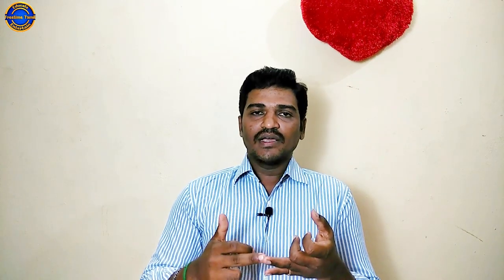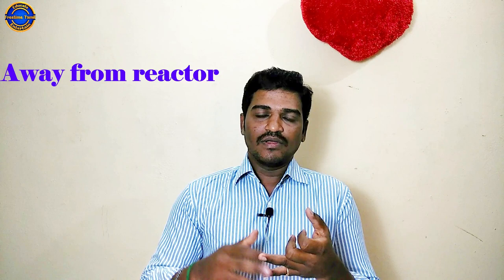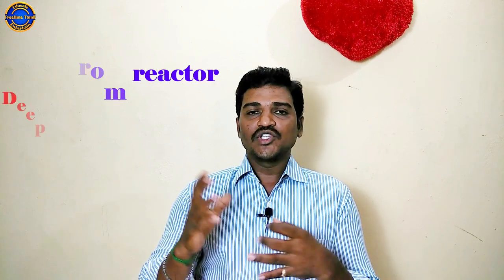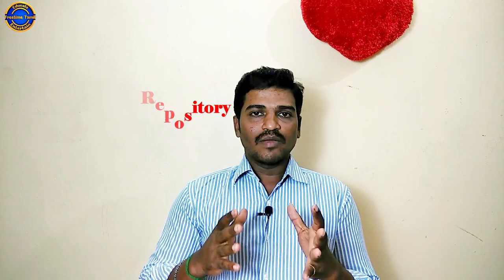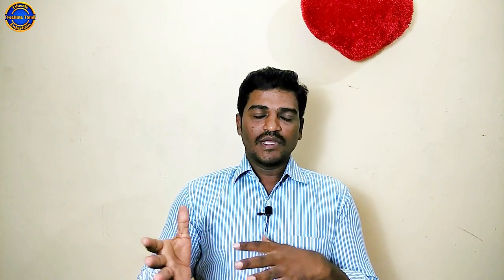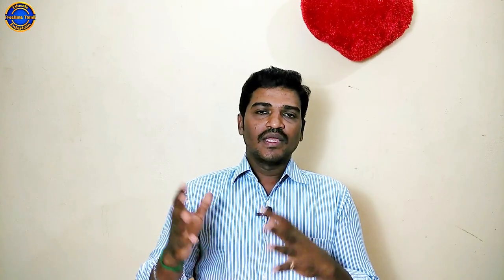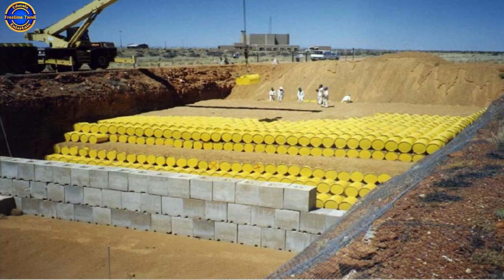One storage option is the away-from-reactor facility. Another is the Deep Geological Repository. The away-from-reactor storage uses steel containers. For cesium, strontium, and plutonium, there are containment units measuring around 6 by 1 meters made of steel containers.